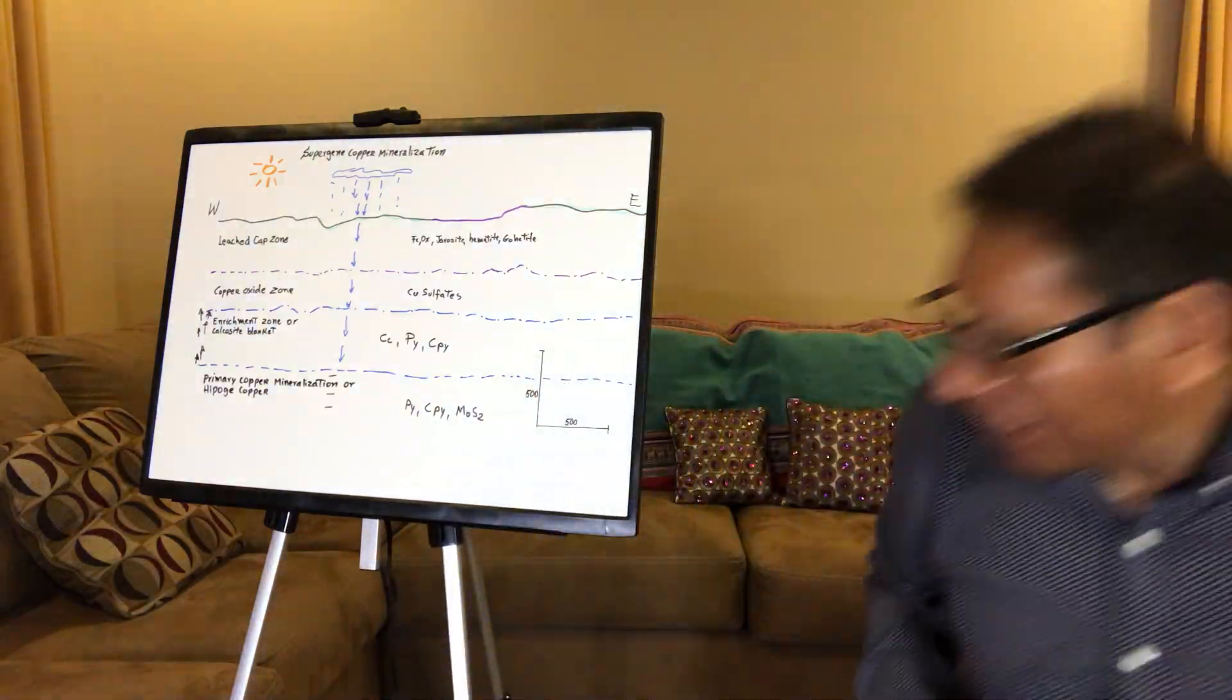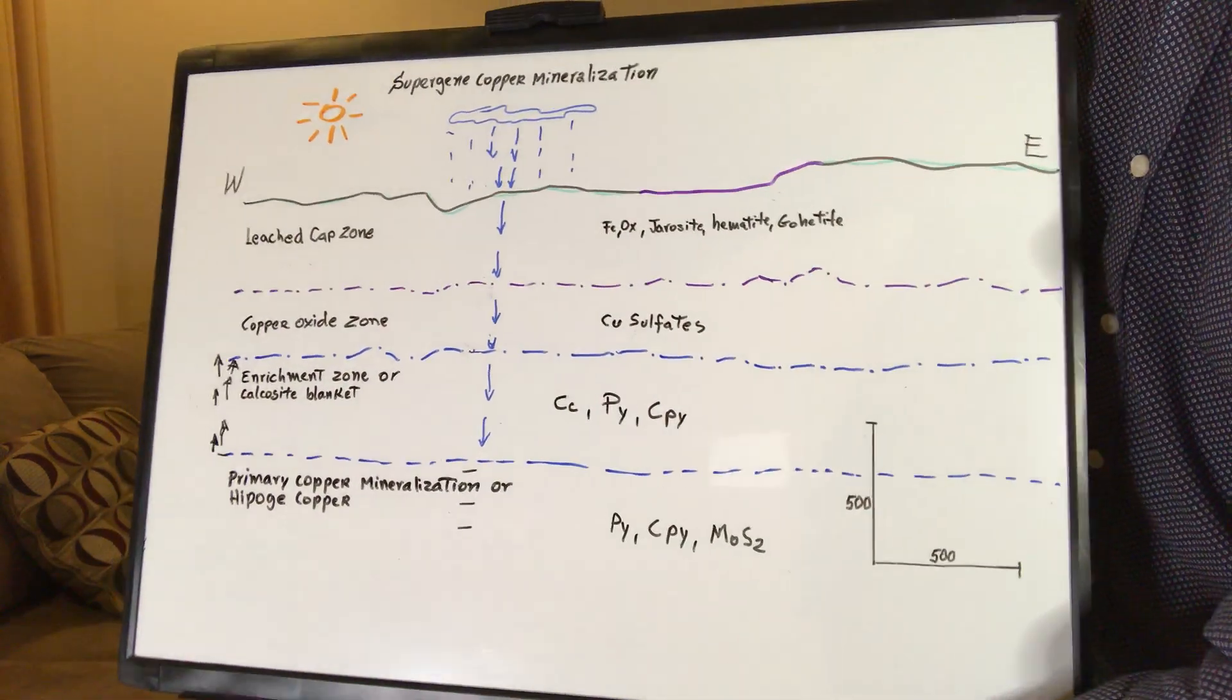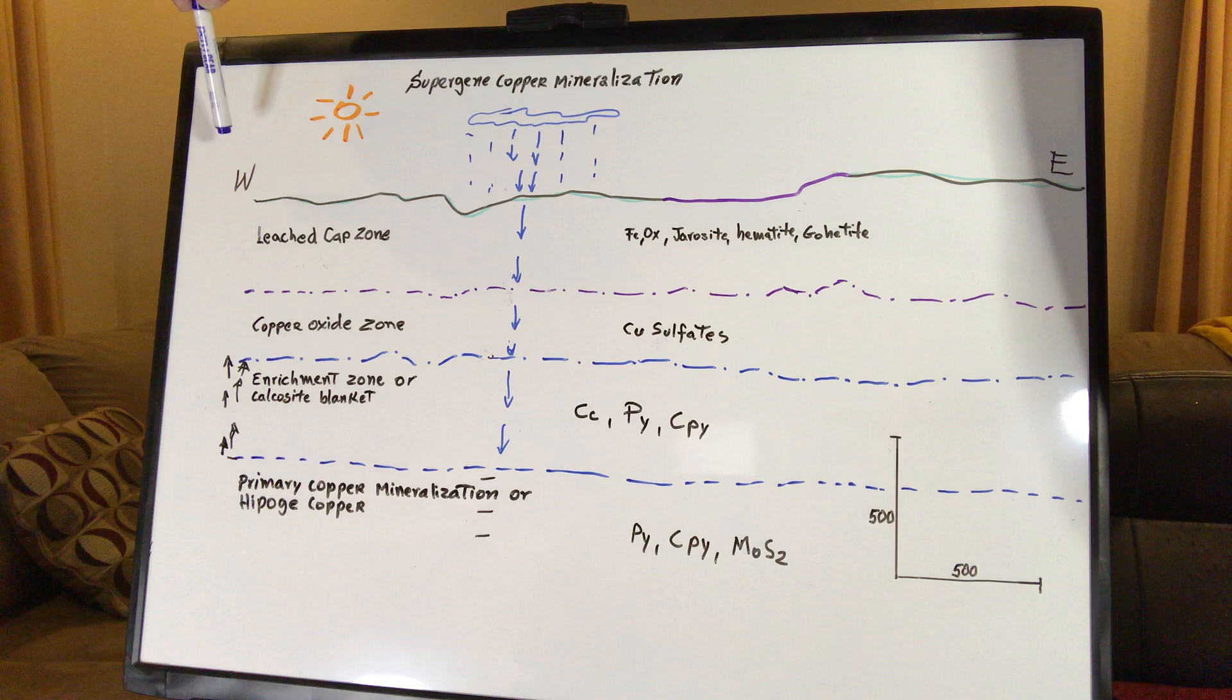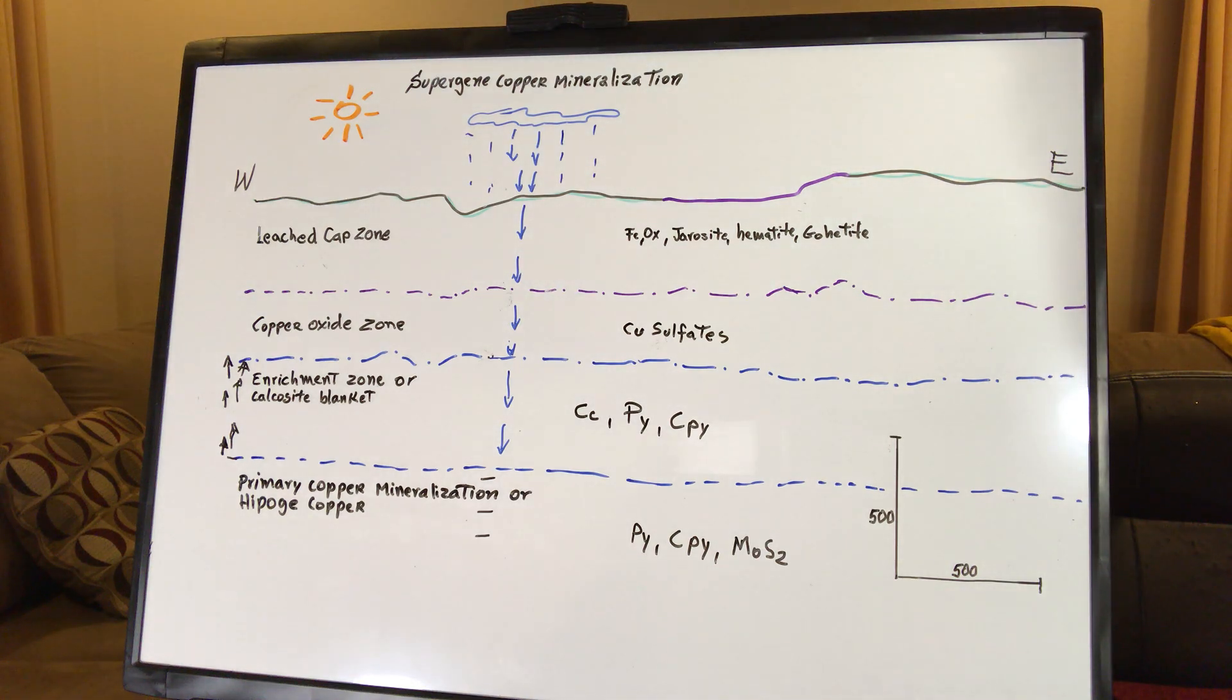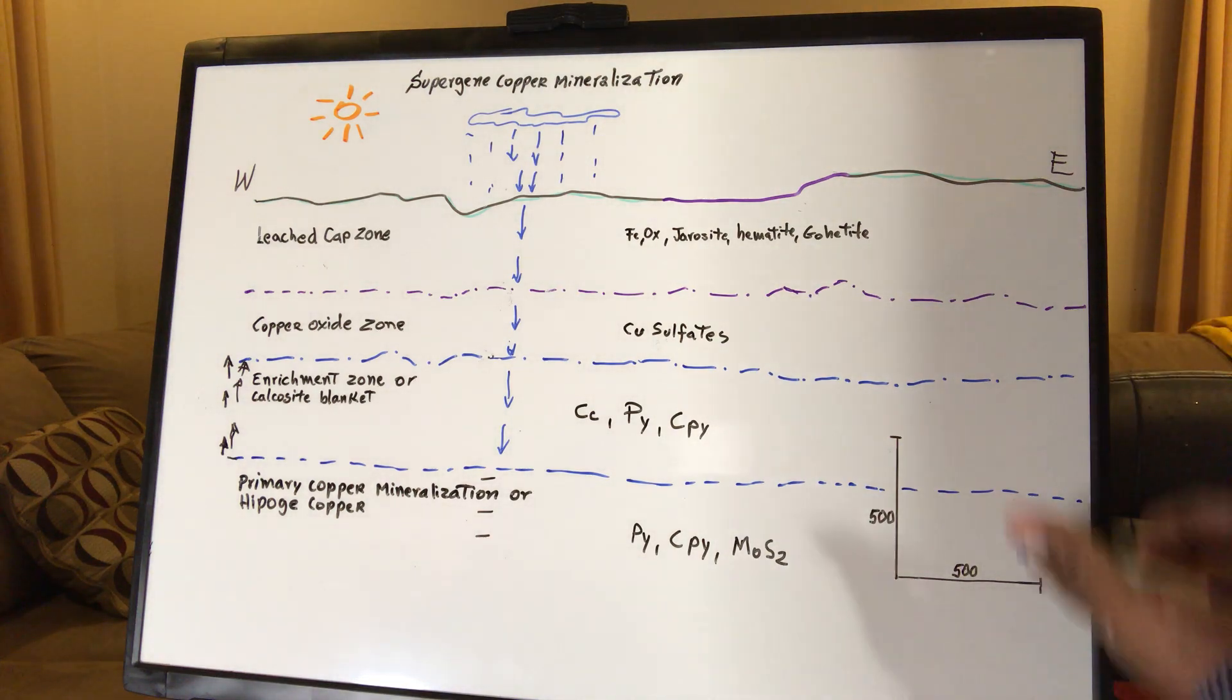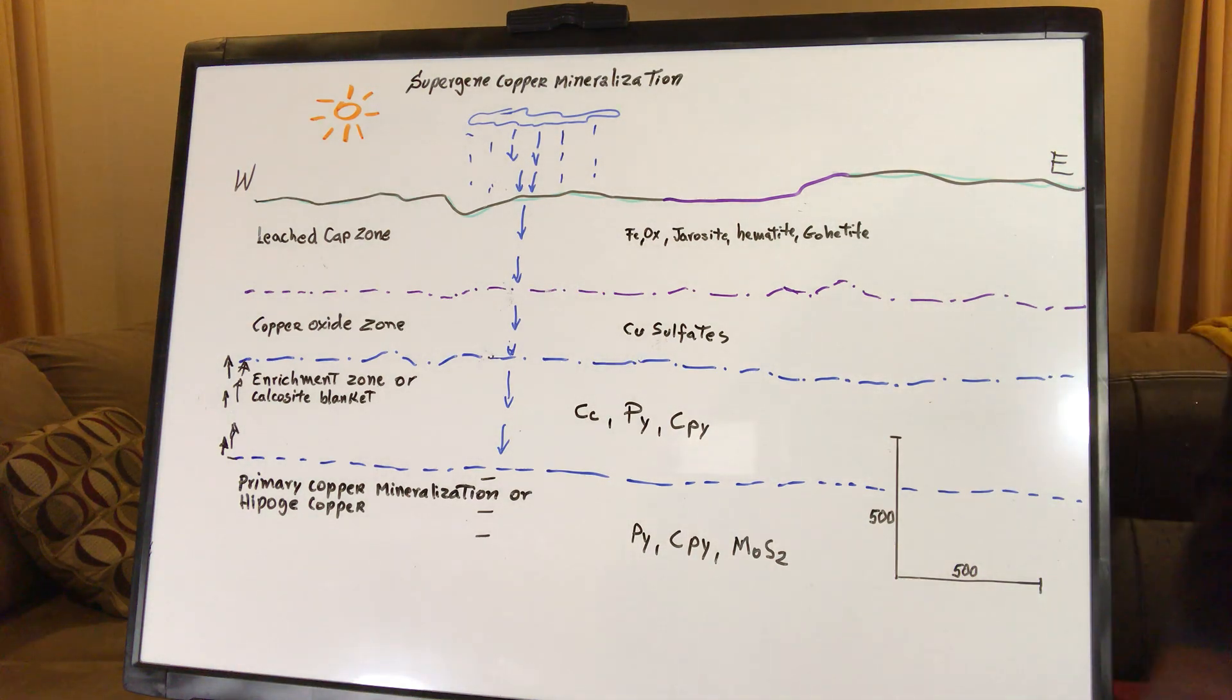So let's go straight to the supergene enrichment mineralization. And so we have this chart, it's going to be from the west to the east, and we have a section looking to the north. So we have a 500, the scale, graphic scale, it could be meters or feet, so we can have like 5,000 feet or 5 kilometers, it's the same vertical, maybe 3 kilometers and 3,000 feet if we want to see in feet.